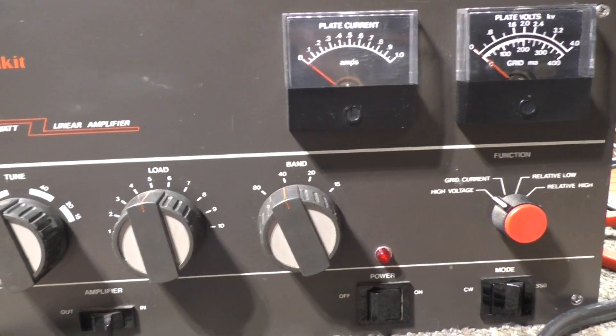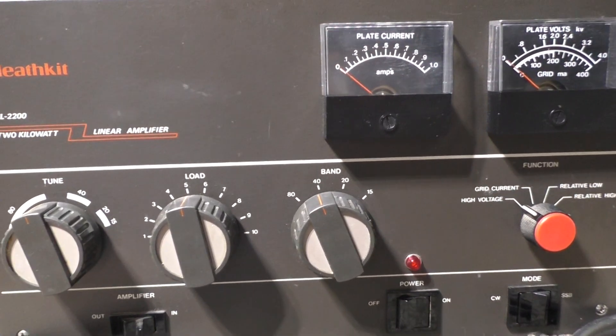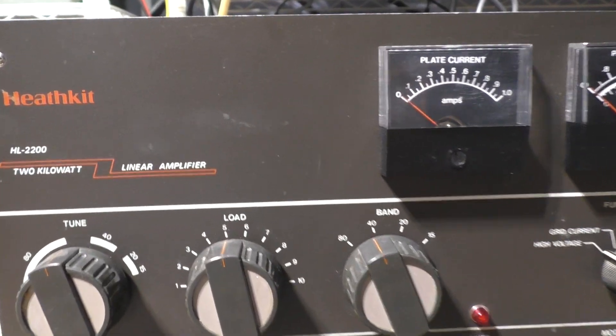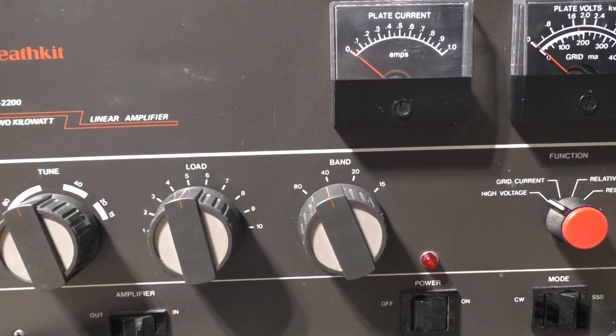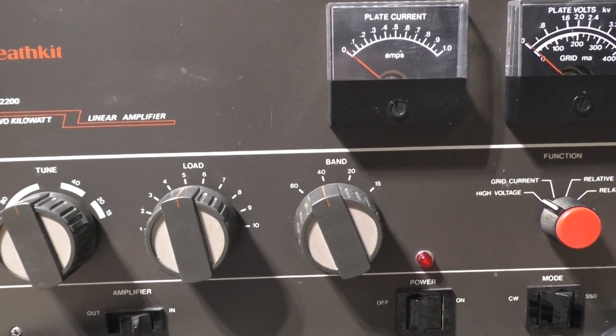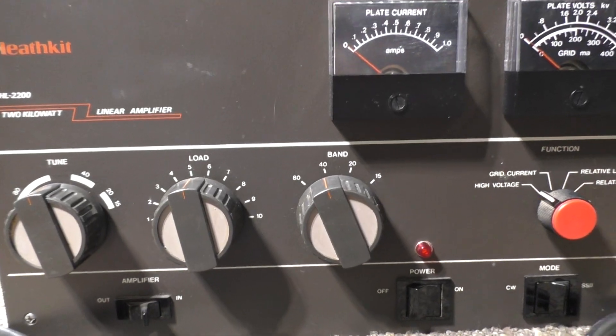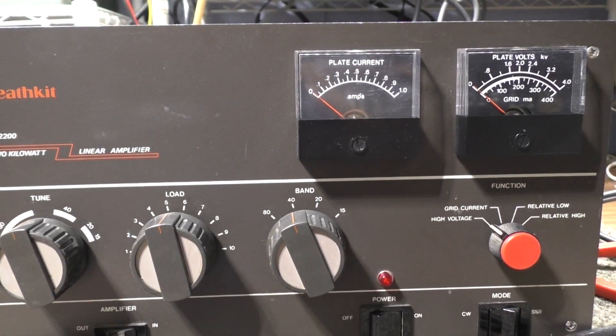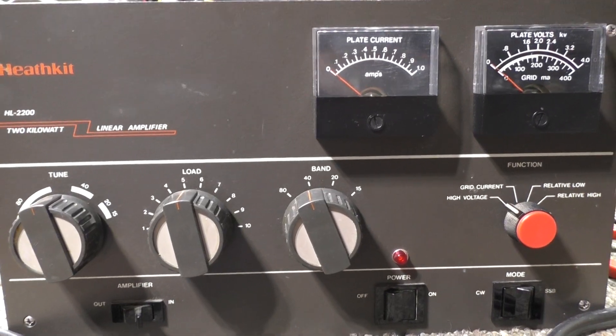So Heathkit went from the SB-220 to the SB-221, from '78 to somewhere around '83. Then when the new series of Heathkit stuff came out, they got rid of that ugly kind of green and went with this brownish-green color here, trying to update the style a little bit.